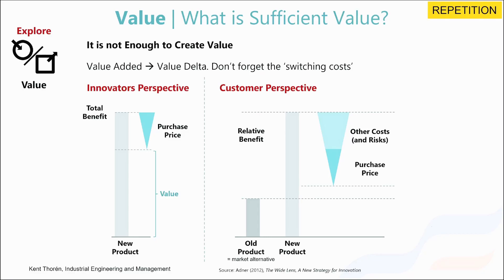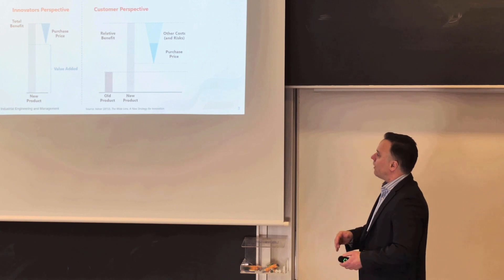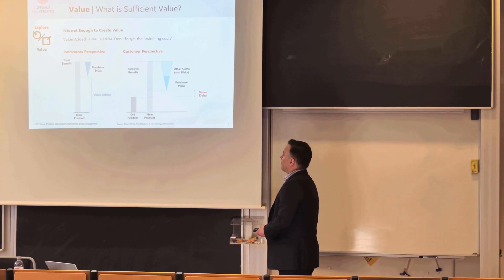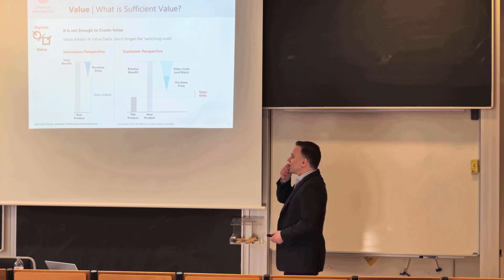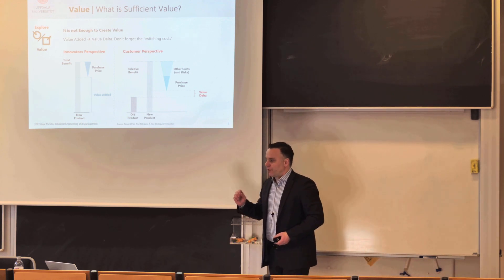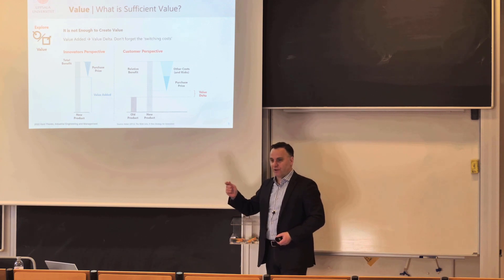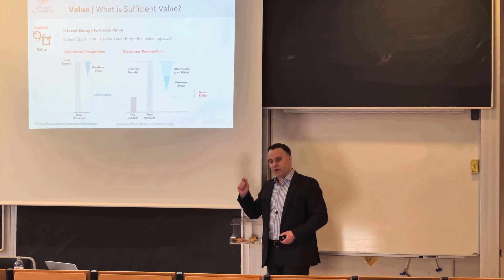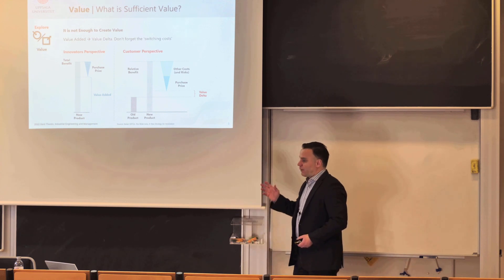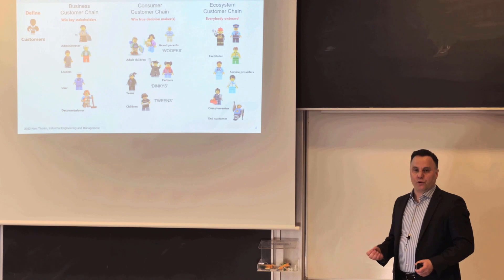The added value is actually smaller because customers also have switching costs, risks, problems — the whole hassle of going through the process and replacing what they're already doing. The relative benefit is squeezed from the bottom and from the top, and what you have here is a value delta. Whenever we think about going out there with our product and we think we have a lot of added value, we have to do a reality check: do we have a compelling argument here?